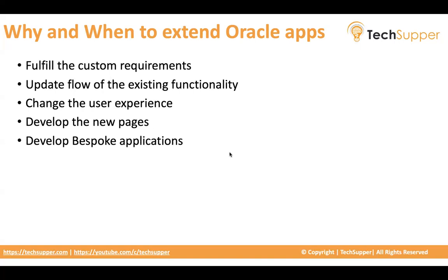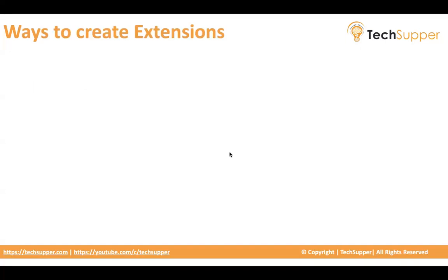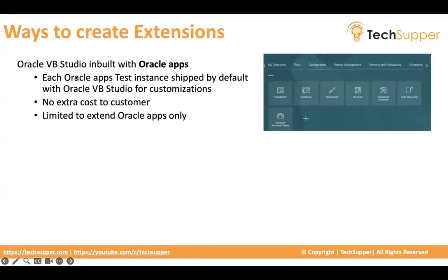With the help of Oracle VB, you can customize existing pages, create new pages, or create complete applications altogether. The first way to create extensions is to use Oracle VB Studio, which comes by default with each and every Oracle SaaS. Every Oracle application test instance ships by default with Oracle VB Studio for your customization. You go to the configuration and you will find Visual Builder. The developer should have access to Visual Builder, and customers do not need to pay any extra cost to use it.